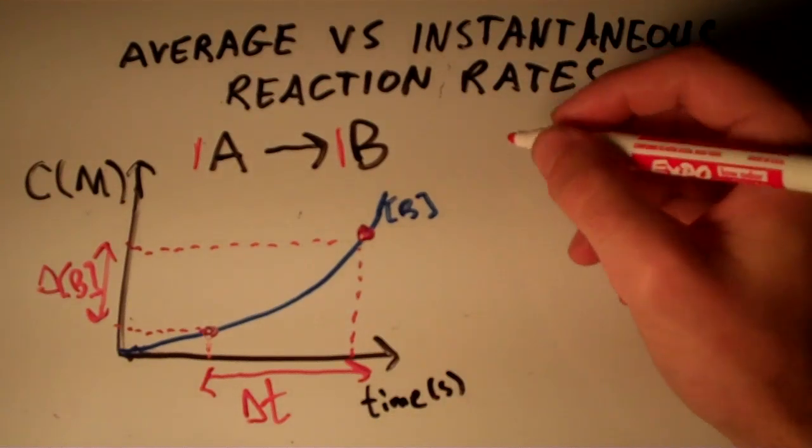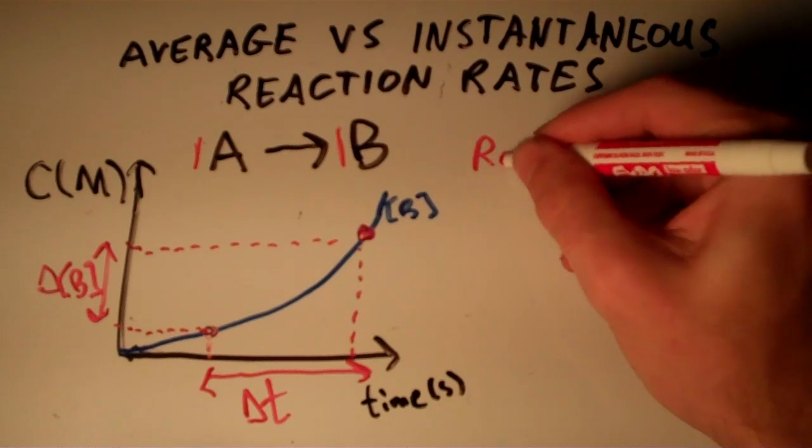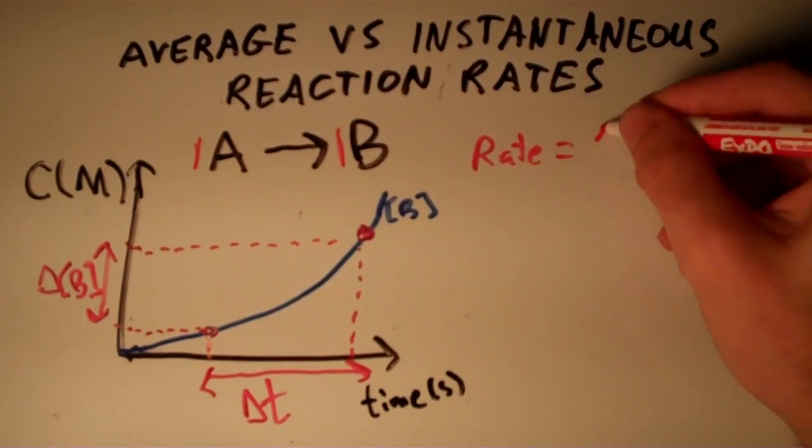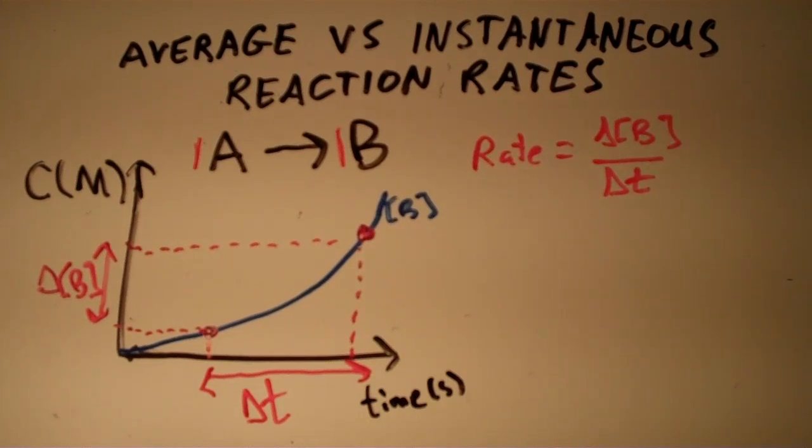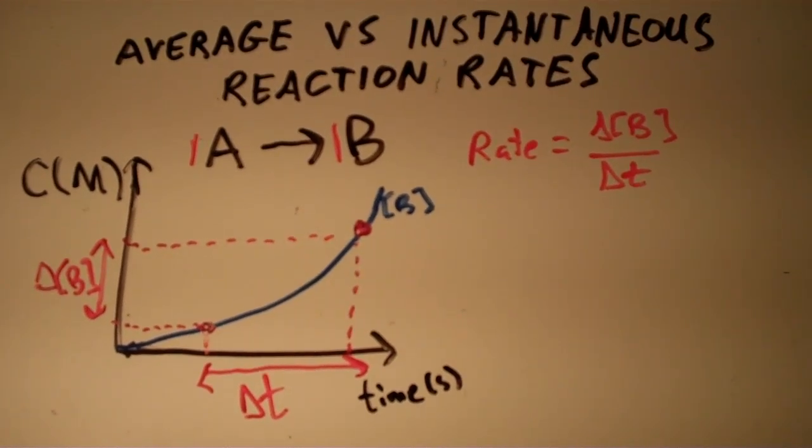And to get an average rate, we just say that the rate is equal to delta concentration of B over delta T. That is the expression for an average reaction rate over the time interval T.